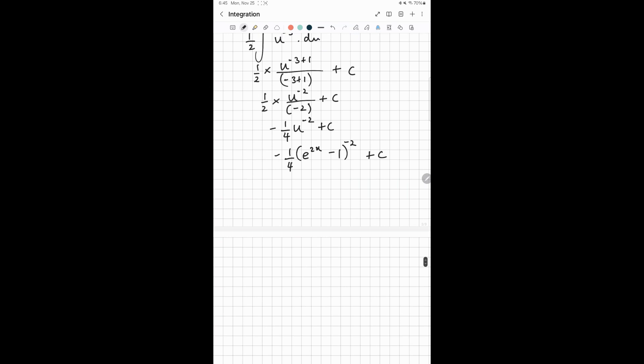So this will be your answer. You can write it as -1/4 over (e^(2x) - 1)^2 plus c. So this is your final answer.